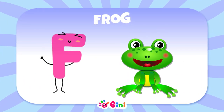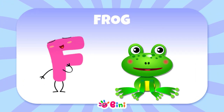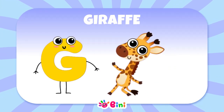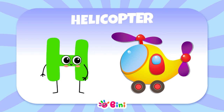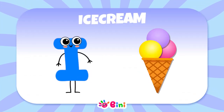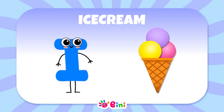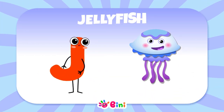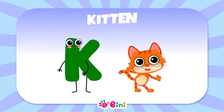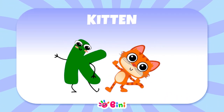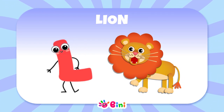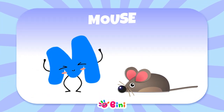The word frog begins with the letter F. The word giraffe begins with the letter G. The word helicopter begins with the letter H. The word ice cream begins with the letter I. The word jellyfish begins with the letter J. The word kitten begins with the letter K. The word lion begins with the letter L. The word mouse begins with the letter M.